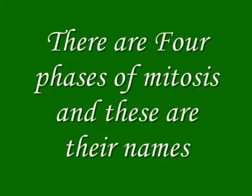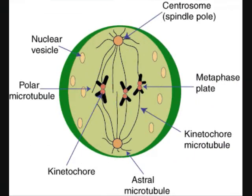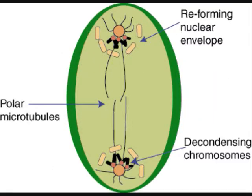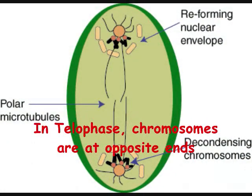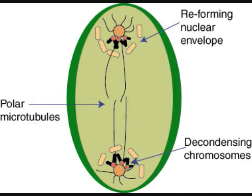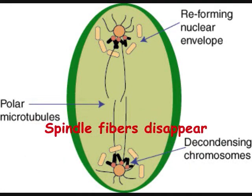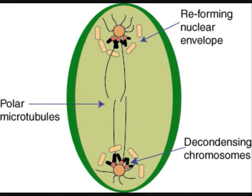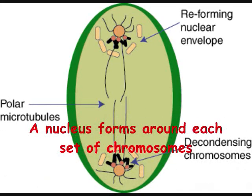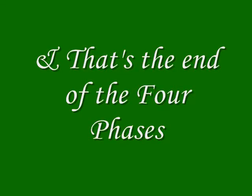There are four phases of mitosis and these are the names: Prophase, metaphase, anaphase, telophase — don't you think they sound the same? In telophase, chromosomes are at opposite ends. Spindle fibers disappear. A nucleus forms around each set of chromosomes. And that's the end of the four phases.